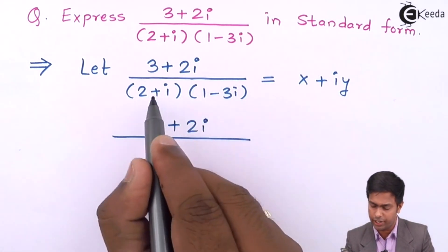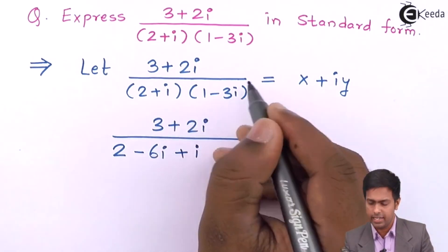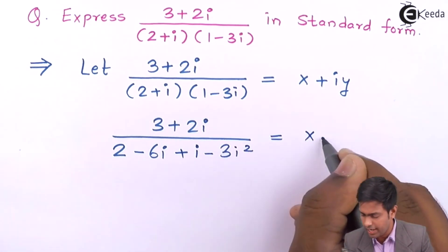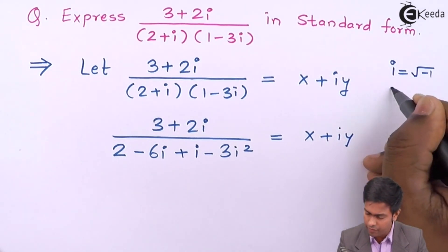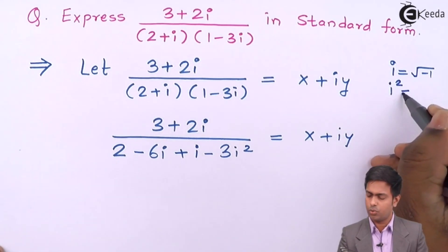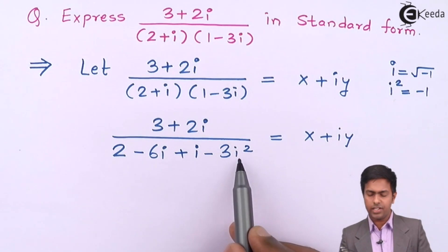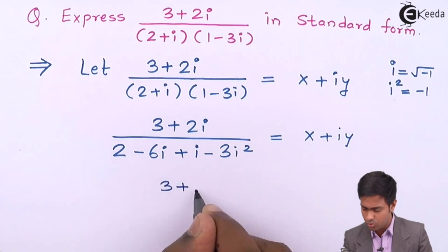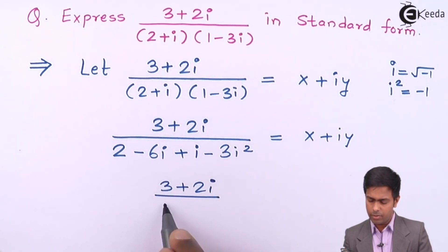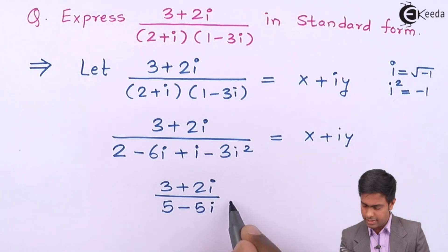Multiplying the second bracket by 2: 2 into 1 is 2, 2 into minus 3i is minus 6i, i into 1 is plus i, and i into minus 3i is minus 3i squared. Now let's simplify. We know that i squared equals minus 1, so minus 3i squared becomes plus 3. Adding 3 and 2 gives 5, so we get 3 plus 2i in the numerator and 5 minus 5i in the denominator, equal to x plus iy.